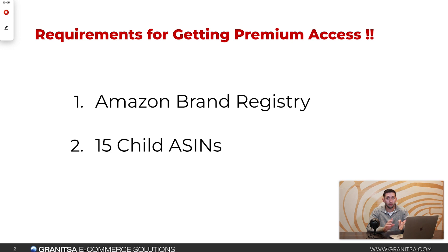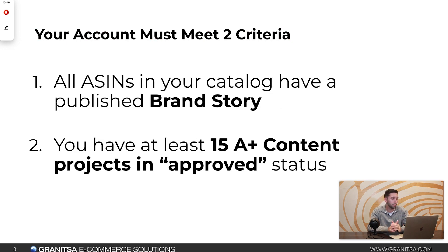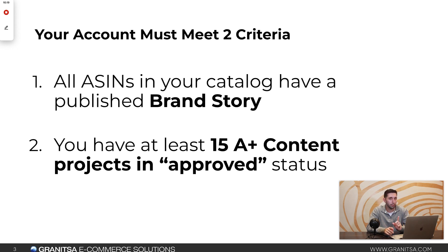If you don't have either of those, go get those first. If you have both of those, then your account has to meet two criteria. All ASINs in your catalog — every single product — needs to have a published brand story.